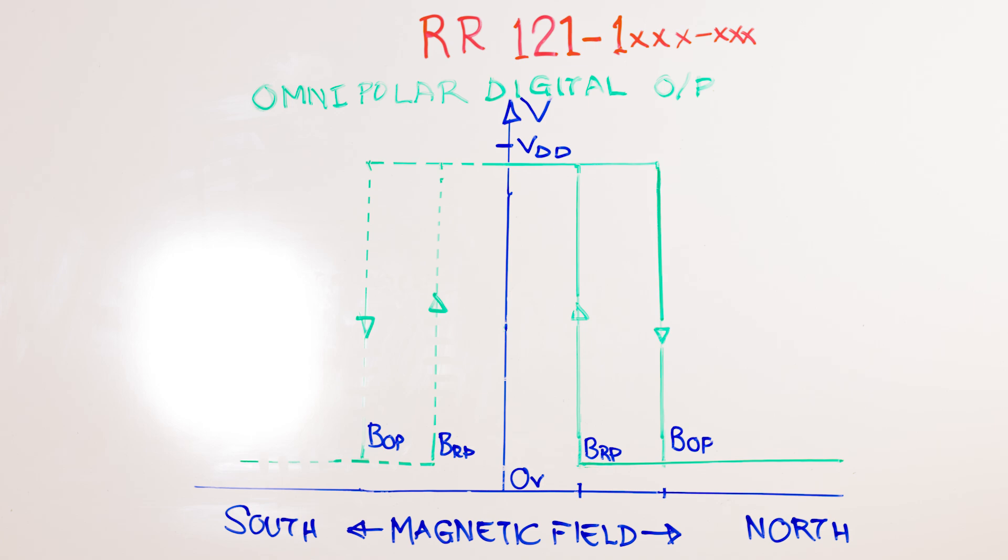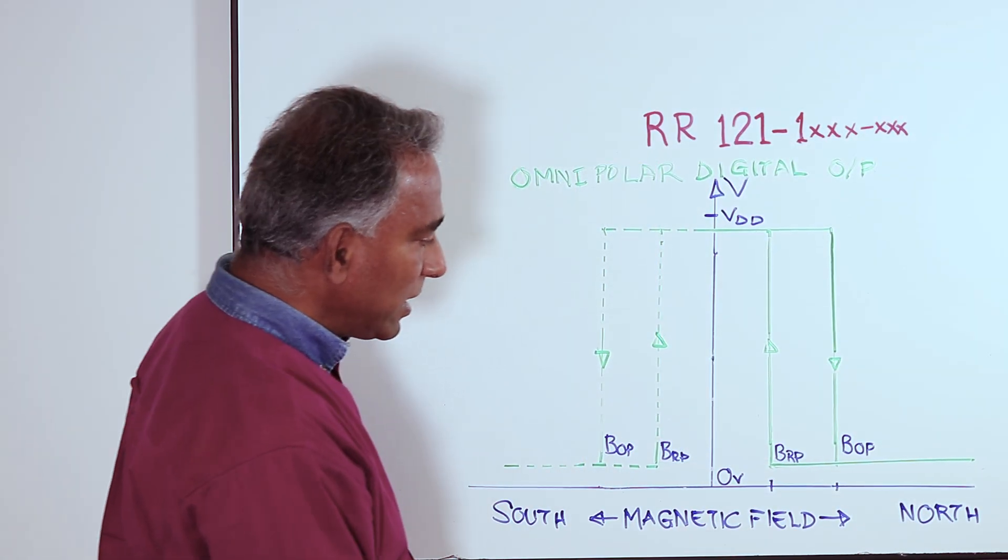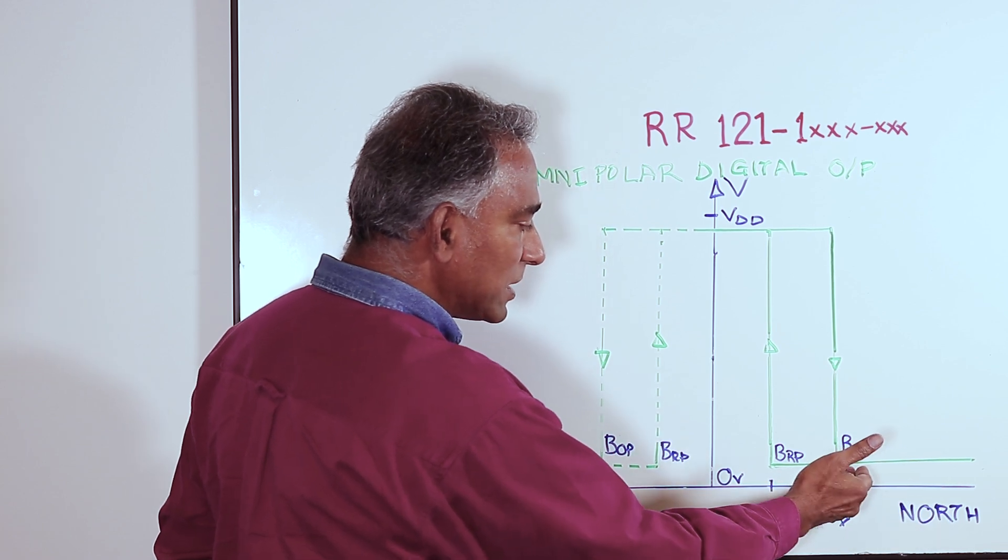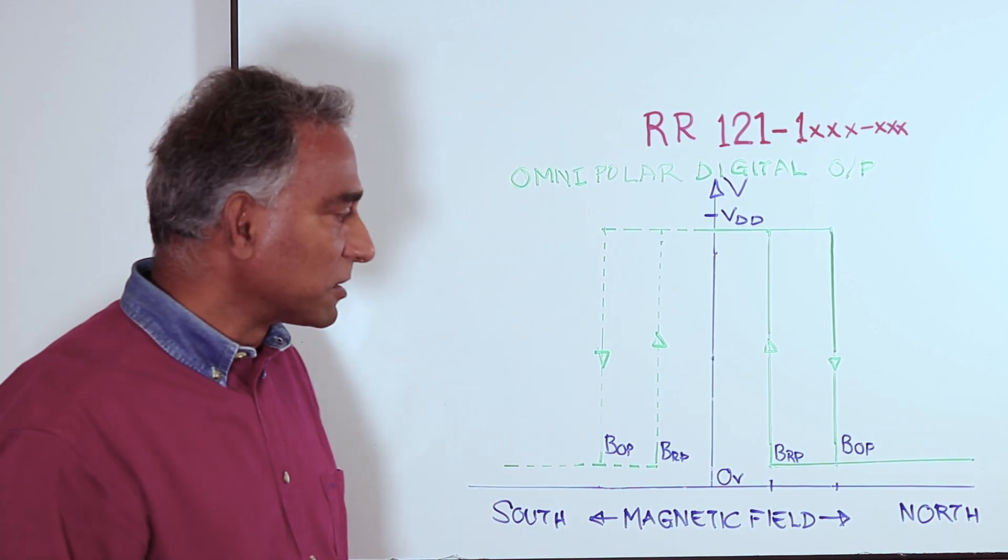So at the operate point, the sensor turns on. As the magnet approaches further and the field strength from the north pole increases further, the output of the magnet remains at a digital low.